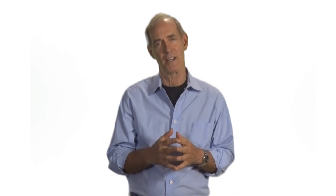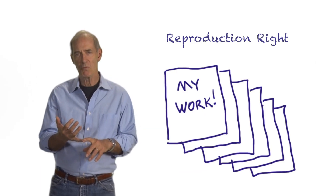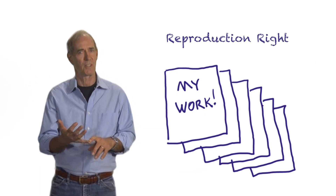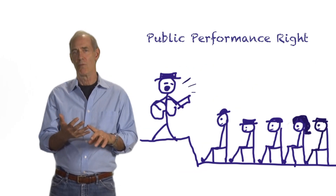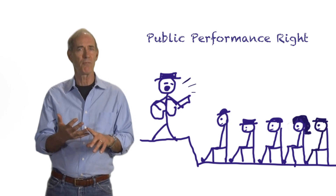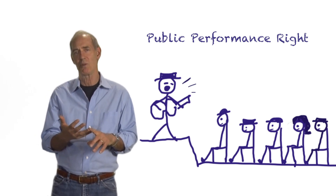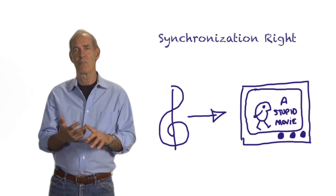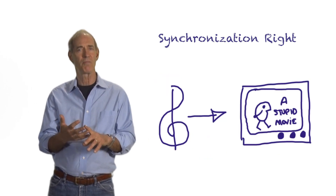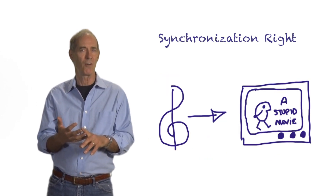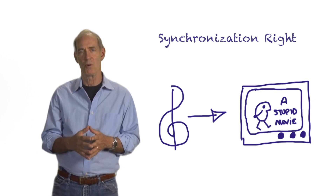How does this relate to music? Well, under the copyright law, copyright owners of music are granted some exclusive rights: the right to mechanically reproduce the music, to make copies of it; the right to publicly display or perform the music in concert or on radio, TV, cable, or the internet; and the right to synchronize the music with visuals or other audio, as you would do in a film or video.